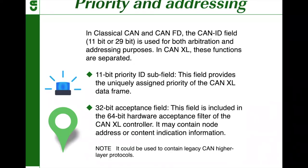In classical CAN and CAN-FD, the CAN-ID field is used for both arbitration and addressing. In CAN-XL, these functions are separated. The CAN-XL protocol separates the priority function — the 11-bit ID — from addressing — the 32-bit acceptance field. The 11-bit priority ID provides the uniquely assigned priority of the CAN-XL data frame, while the 32-bit acceptance field can contain the node address and the message content as a message ID.